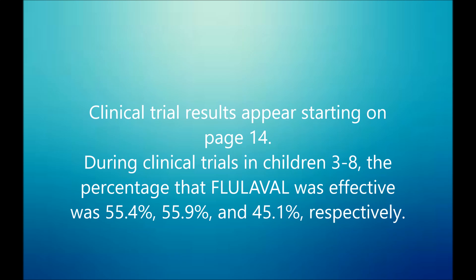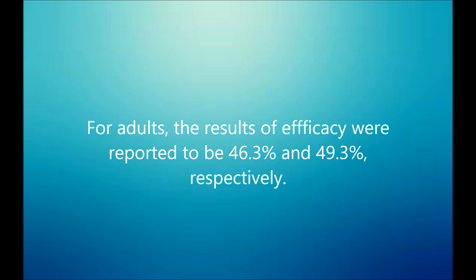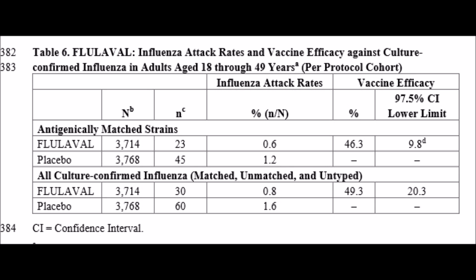Annual revaccination is recommended because immunity declines during the year after vaccination and because circulating strains of influenza virus change from year to year. Clinical trial results appear starting on page 14. During clinical trials in children aged three to eight, the percentage that flu label was effective was 55.4%, 55.9%, and 45.1% respectively. Here is a screenshot showing the vaccine trial efficacy. For adults, the results of efficacy were reported to be 46.3% and 49.3% respectively, along with a copy of the adult trial results.